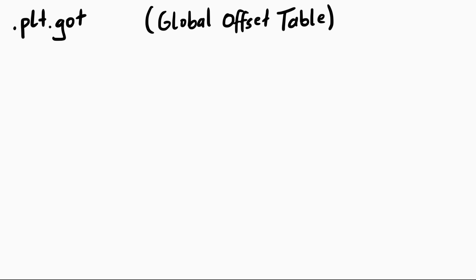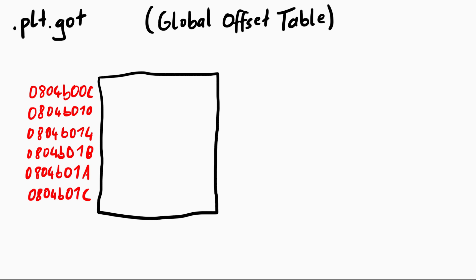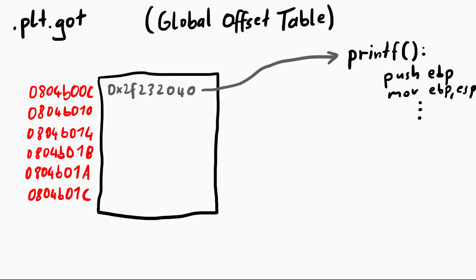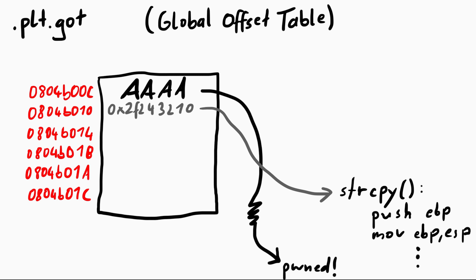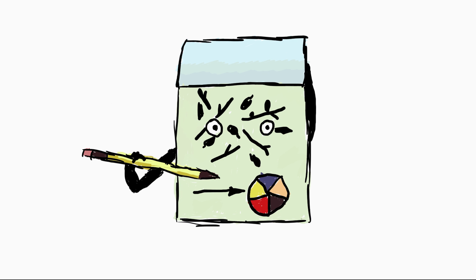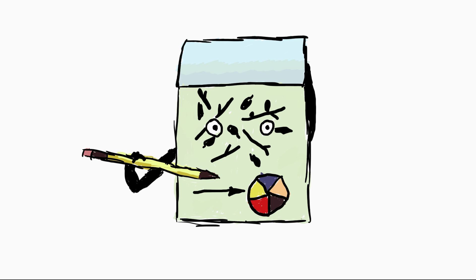Another interesting data structure is the global offset table, which is basically just an area in memory containing pointers to functions. If you overwrite an entry there, you can control what will be executed when a function is called that references an address from this table. Often times you cannot directly overwrite these values, but that just means you have to become creative.